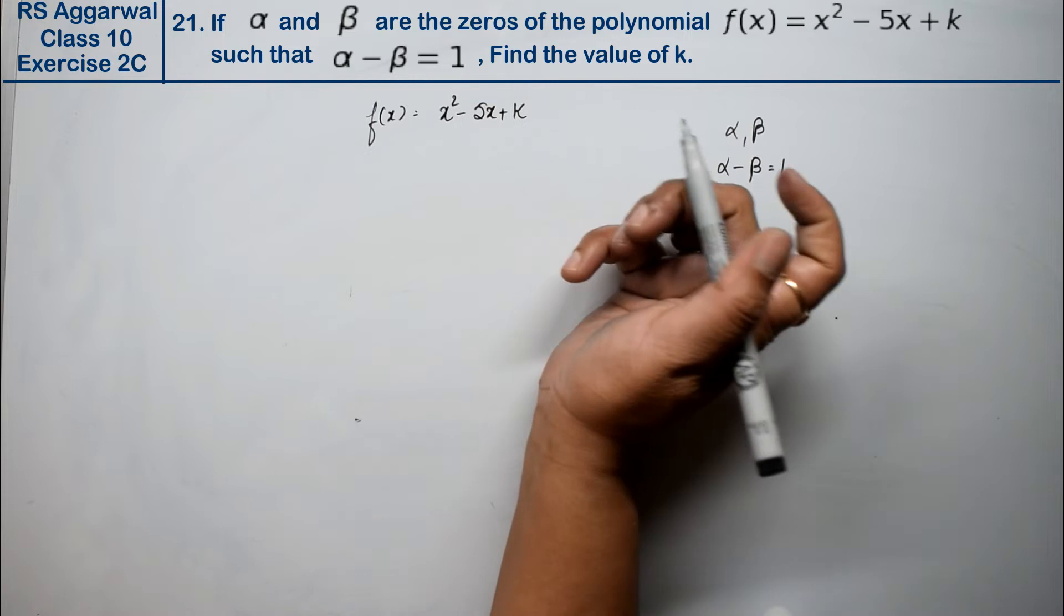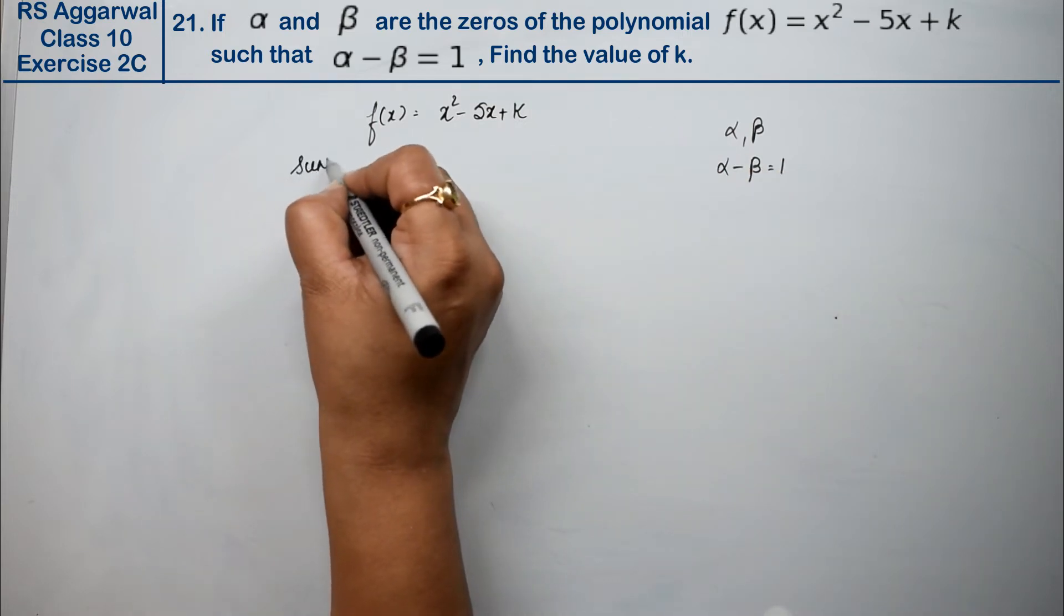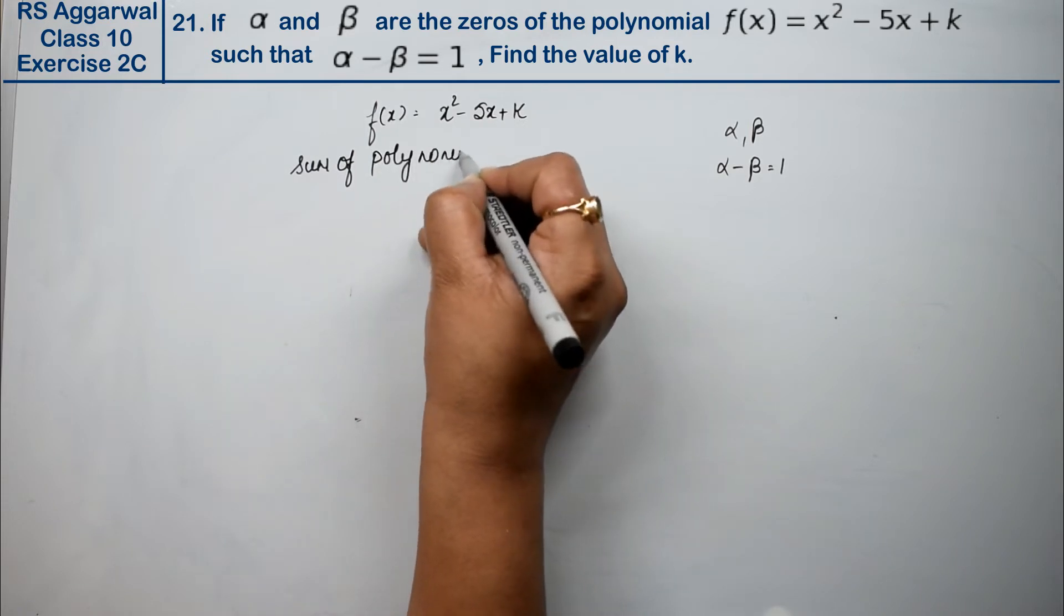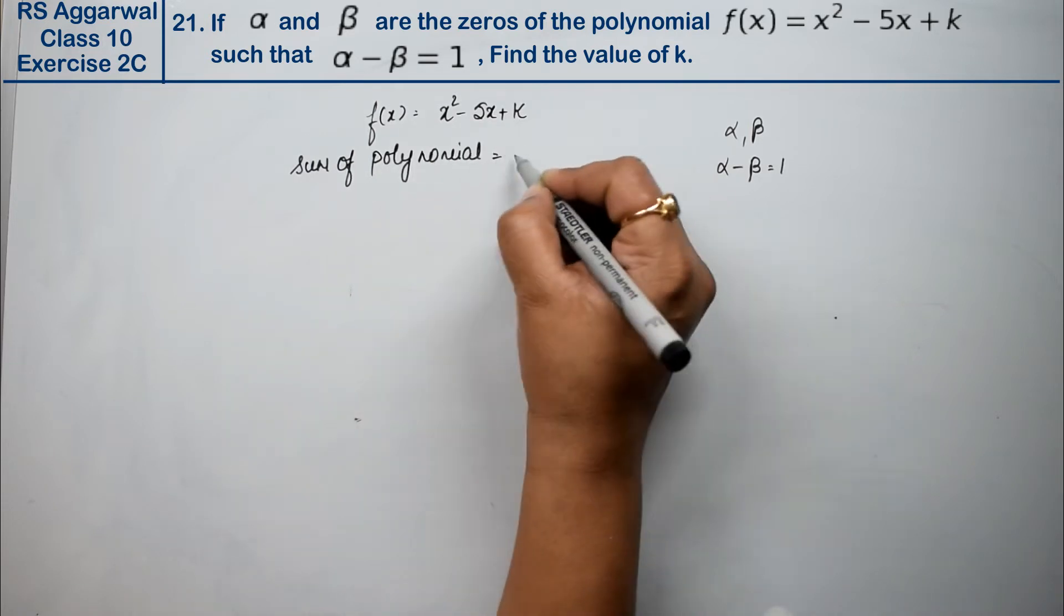So what we'll do is find the sum of polynomial. The sum of polynomial is minus the coefficient of x upon the coefficient of x².